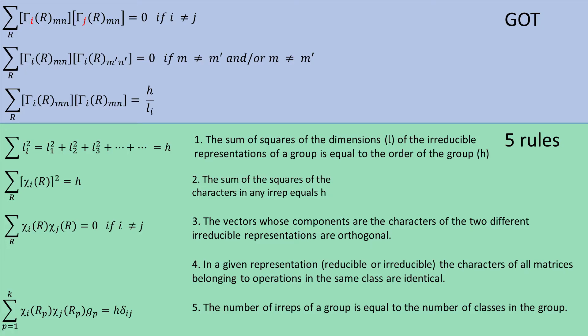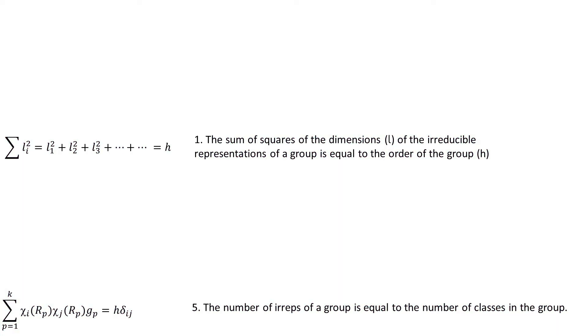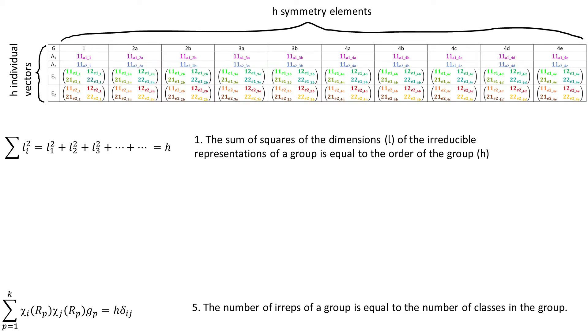And if you want a more formal summary, here are all the formulas that we talked about last time. These two are the ones that really matter to us. Rule number 1, the sum of squares of the dimensions of EREPs is equal to the order of the group H, which comes from the fact that there are as many individual vectors as there are symmetry operations in a group.